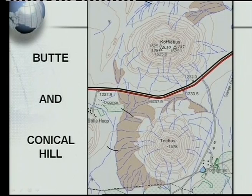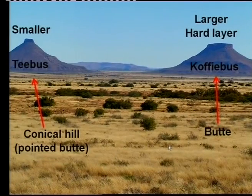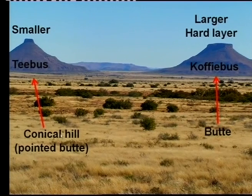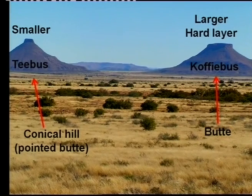Now we have the butte and the conical hill. On the topographical map, the butte has a larger top than the conical hill, which has a very small top. Looking at the photo of the same area — Tierberg is the conical hill, or pointed butte as some call it, and Koffieberg is the butte. The key difference is the larger hard cap rock layer on the butte compared to the conical hill.